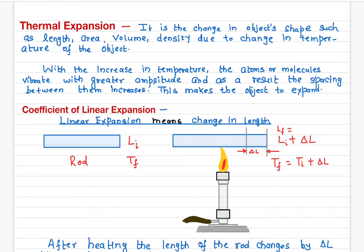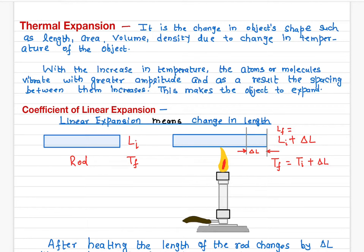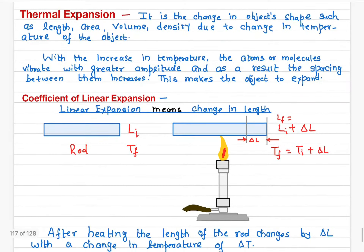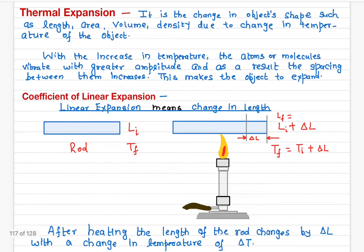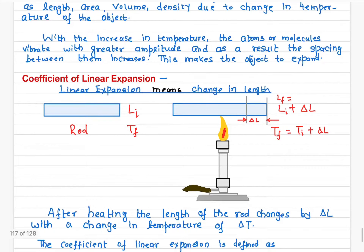In order to measure how much the length of a material changes due to a change in temperature, we use a term called the coefficient of linear expansion. If we know the coefficient of linear expansion, we should be able to measure the change in length of the object. Let's define it.